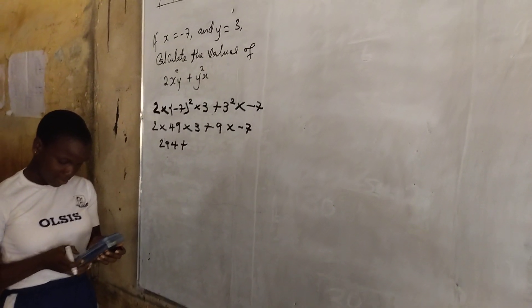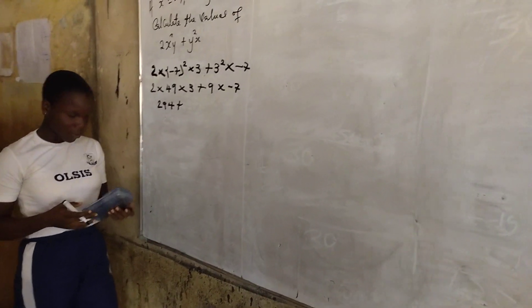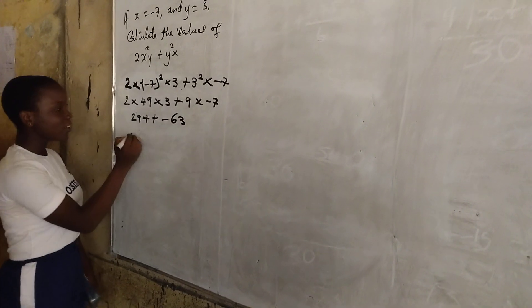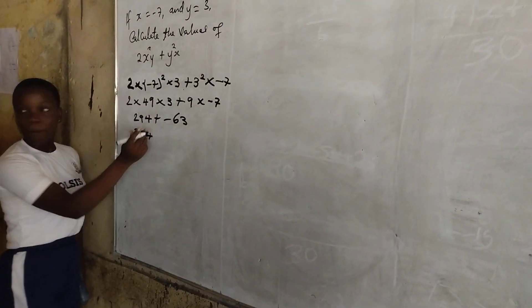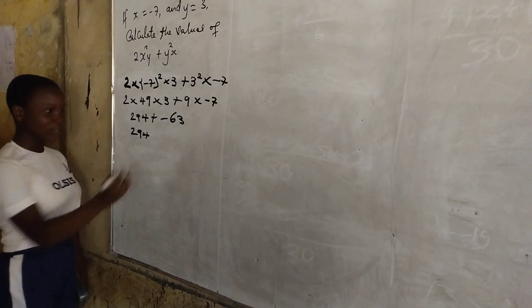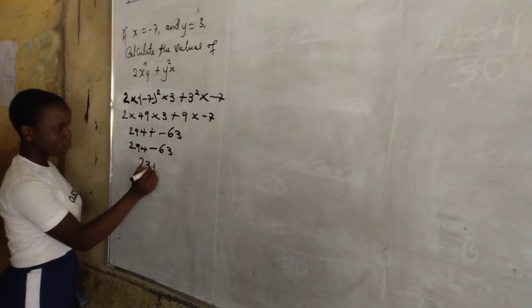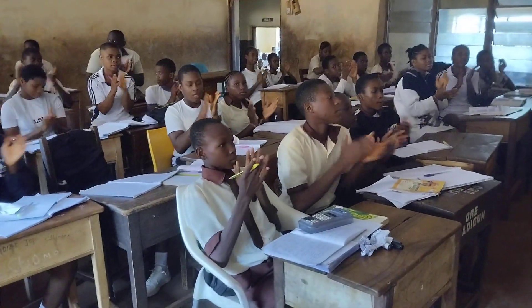9 times minus 7 gives minus 63. 294 plus minus 63 gives 231. Thank you.